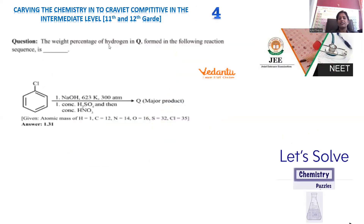Move on to question number four: the weight percentage of hydrogen in Q formed in the following reaction sequence. An organic compound is treated with several reagents and the product generated is required to be analyzed. We are dealing with the weight percentage — it is an analytical part — and this is a blending type of question where we are starting with chlorobenzene.